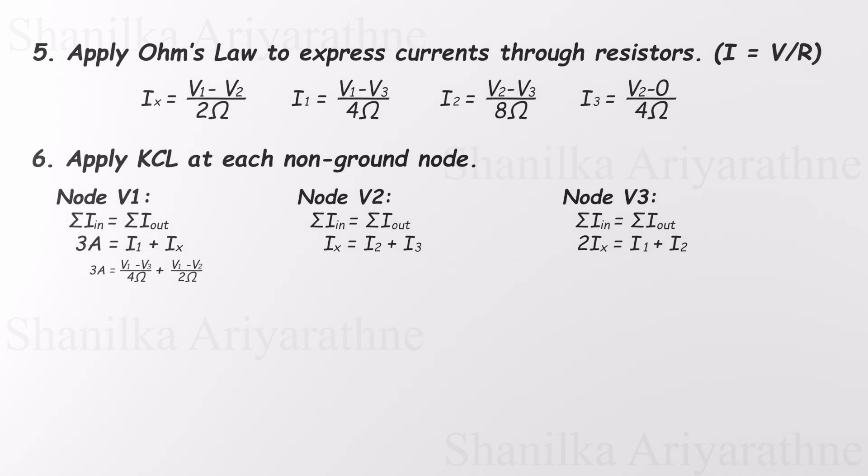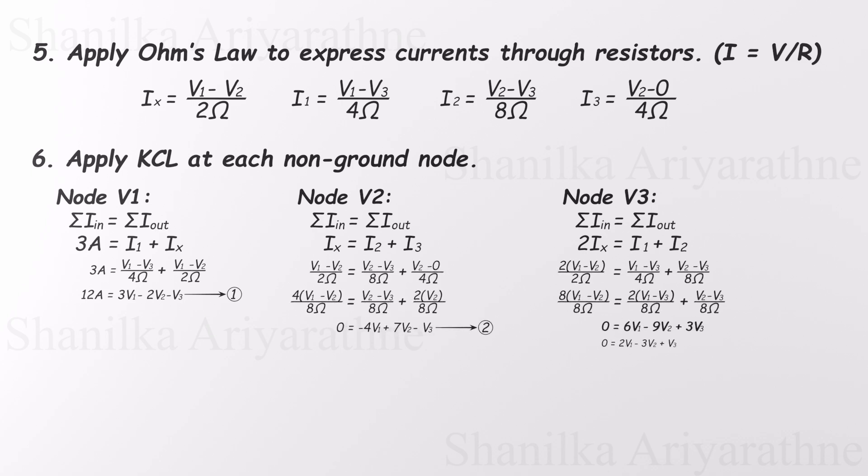Now we substitute each of those currents using the expressions we got from Ohm's Law. Plug all of those into the KCL equations, and we're left with 3 equations and 3 unknowns: V1, V2, and V3.